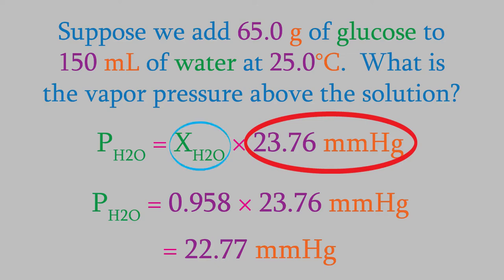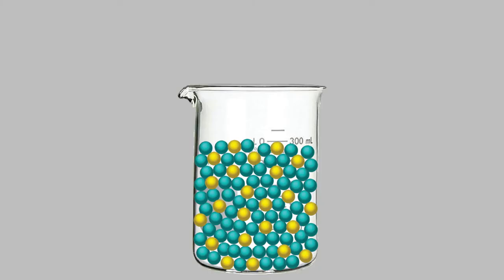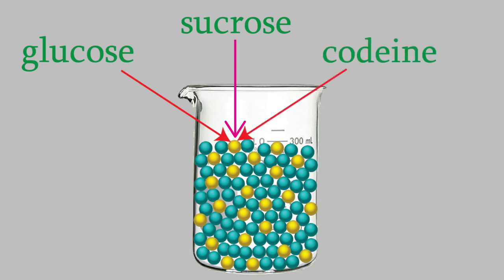Notice that we needed the mole fraction of the solvent, water, not the glucose. That's because the vapor pressure we're calculating is the vapor pressure for the water. Also, notice that it didn't really matter that the solute was glucose. Our solution had 0.361 moles of glucose, but we would have gotten the same result if it had been 0.361 moles of sucrose, or codeine, or another solute. That's because all that matters is how much of the solute we have. In other words, how many moles, not what the solute actually is. That'll be true for all of the colligative properties. It's not what the solute is, it's the amount of solute that's important.